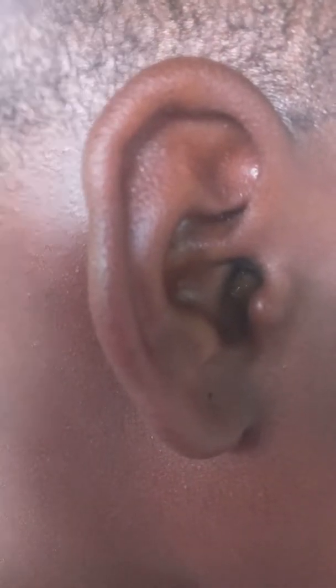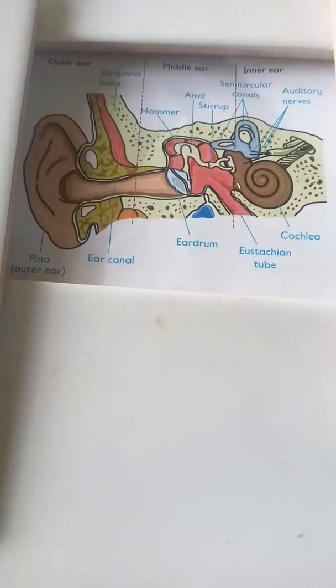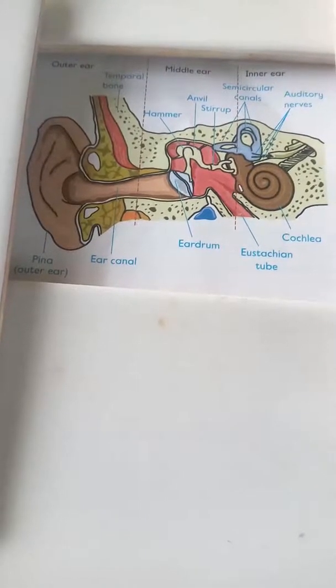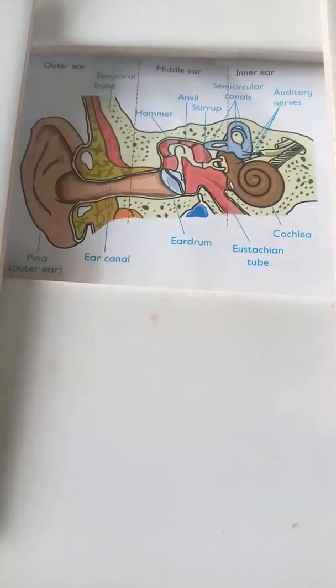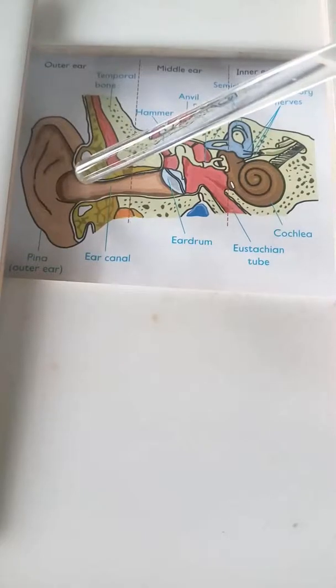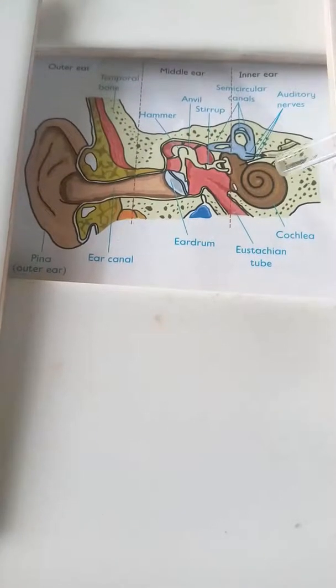The human ear converts sound energy to mechanical energy and then to a nerve impulse that is transmitted to the brain. The human ear consists of three basic parts: the outer ear, middle ear, and inner ear.